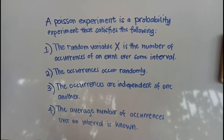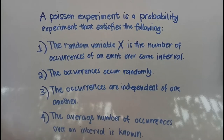A Poisson experiment is a probability experiment that satisfies the following: The random variable x is the number of occurrences of an event over some interval, where occurrences occur randomly, the occurrences are independent of one another, and the average number of occurrences over an interval is known.